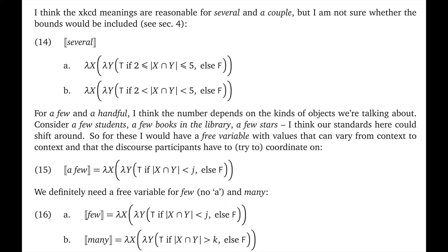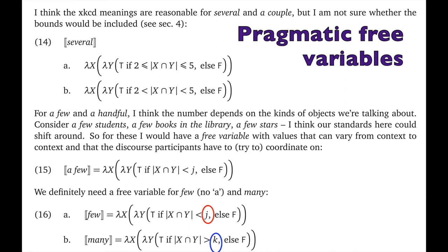The hallmark of both these meanings is that we consider the cardinality of the intersection as we do with other cardinal determiners and other things in the class, like at most three and at least three. But for few and many, the precise numerical value used for the comparison is not specified. It's what we call a pragmatic free variable. I've given it as J in 16a and K in 16b. And we should ask the question, how do these variables get their values? That is, how do we know what the speaker means with few students if we don't know what this pragmatic free variable should be valued as?